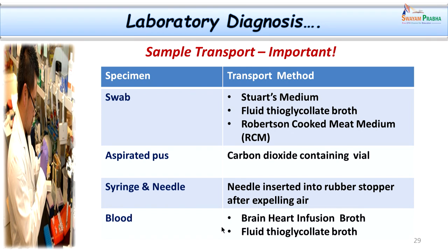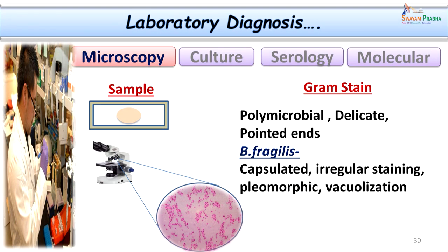For blood collection, it should be collected in brain heart infusion broth or part of the blood put into fluid thioglycolate medium. Unless all these precautions are taken, improperly collected samples already exposed to air will be rejected — there is no point in carrying out culture on them.